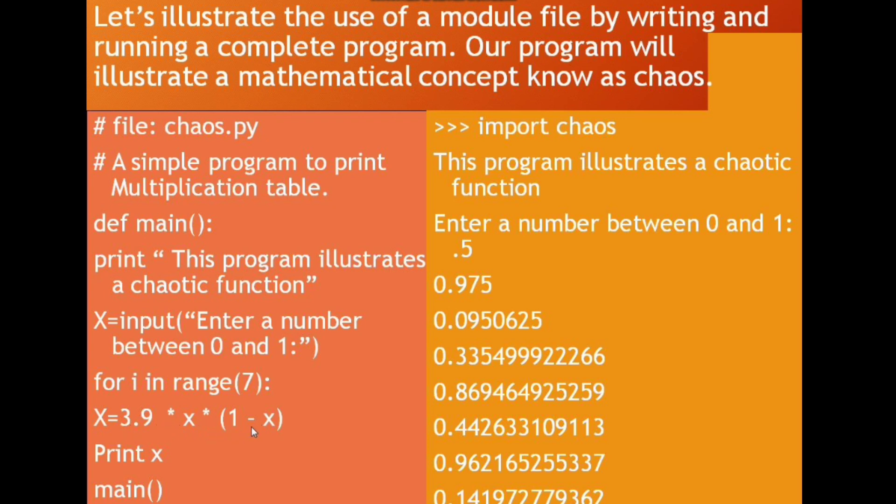print x is to print the x value in the output screen. The last statement main is called to invoke the function again. This is our output: import chaos. Then this is the statement what we are getting from the print statement, and this statement is also from the input statement.